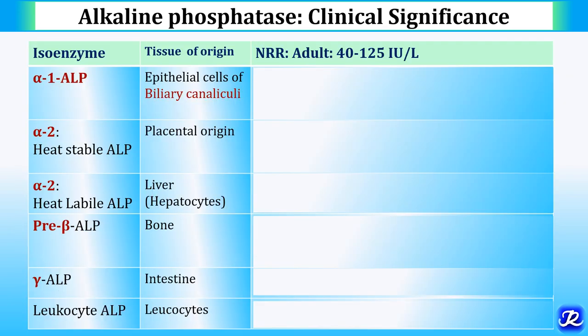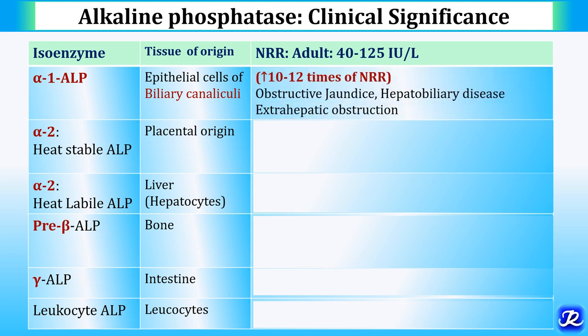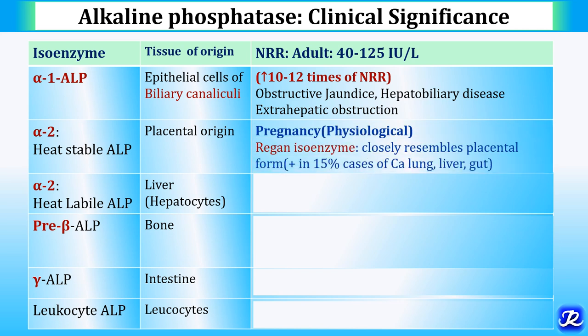Clinical significance of ALP isoenzymes: Alpha-1, present on epithelial cells of biliary canaliculi, is increased in biliary or bile duct obstruction — up to 10 to 12 times the normal reference range — occurring in obstructive jaundice, hepatobiliary disease, and extrahepatic obstruction. Alpha-2 heat stable, of placental origin, is physiologically increased in pregnancy. The Regan isoenzyme closely resembles the placental form and is increased in 15% of carcinoma cases involving lung, liver, and gut.